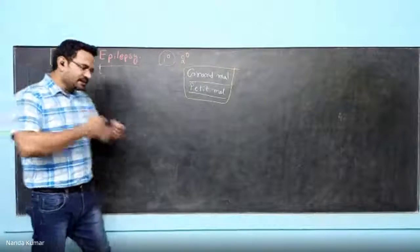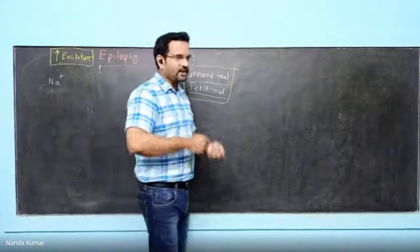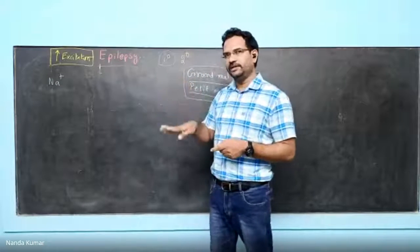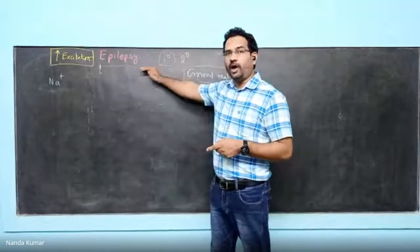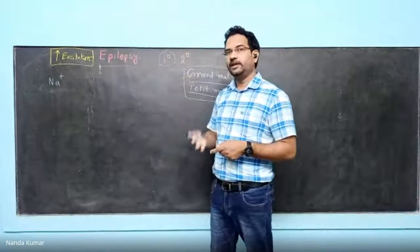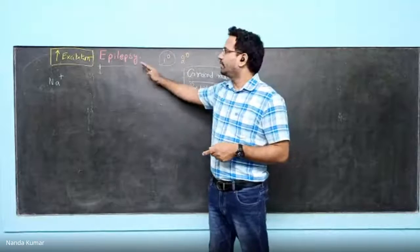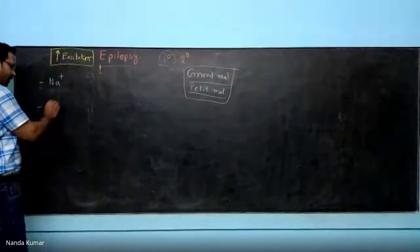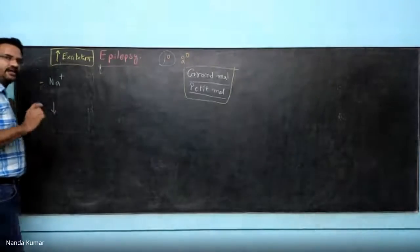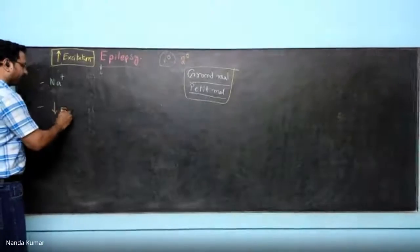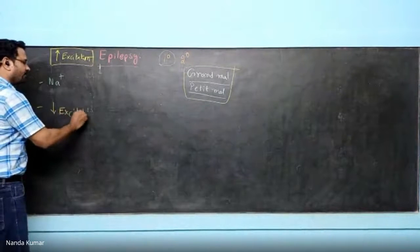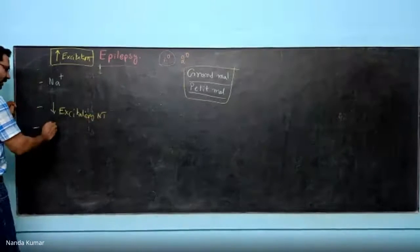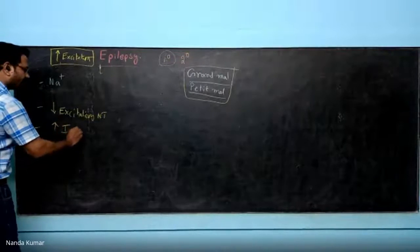There are excitatory neurotransmitters and inhibitory neurotransmitters. If you reduce the effect of excitatory neurotransmitters, you can treat epilepsy. Or you can enhance inhibitory neurotransmission to treat epilepsy. So the goal is to reduce excitatory neurotransmission or to enhance inhibitory neurotransmission.